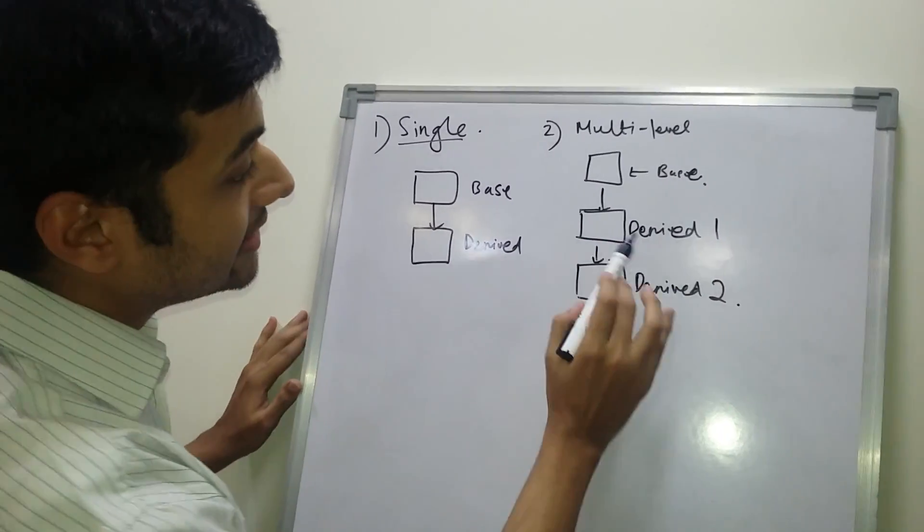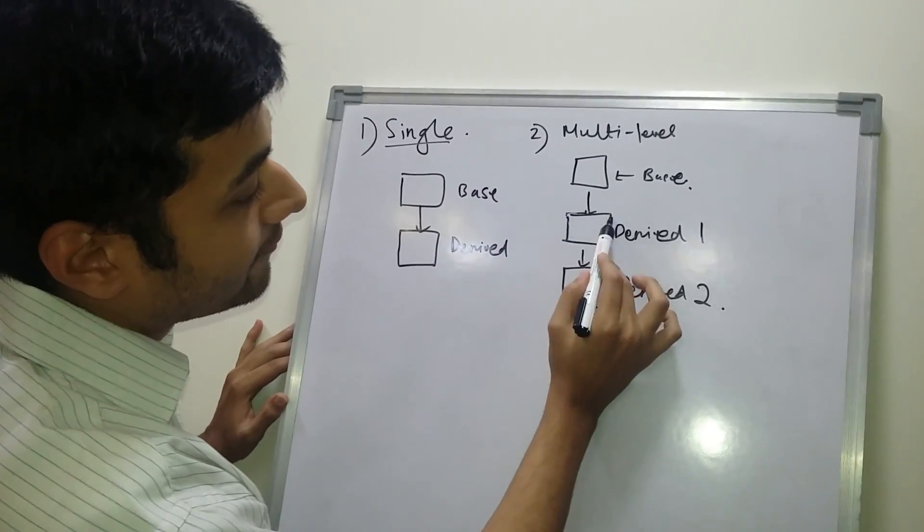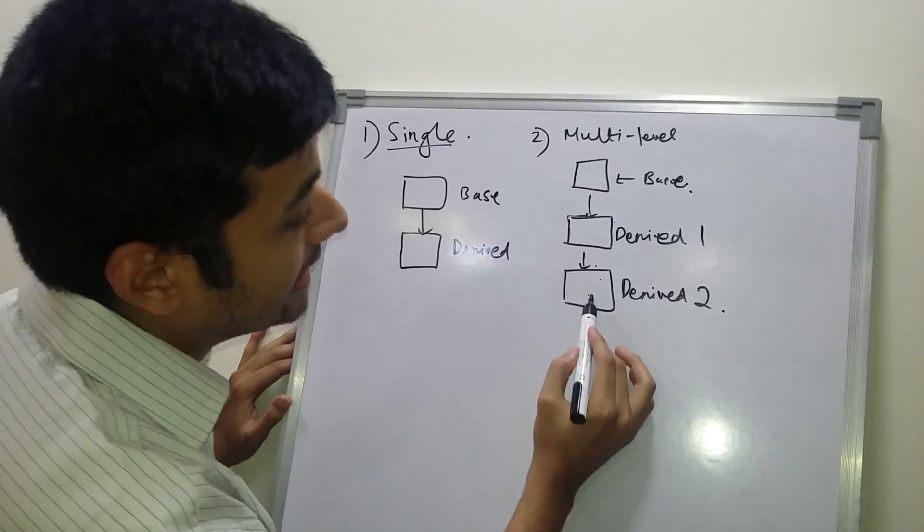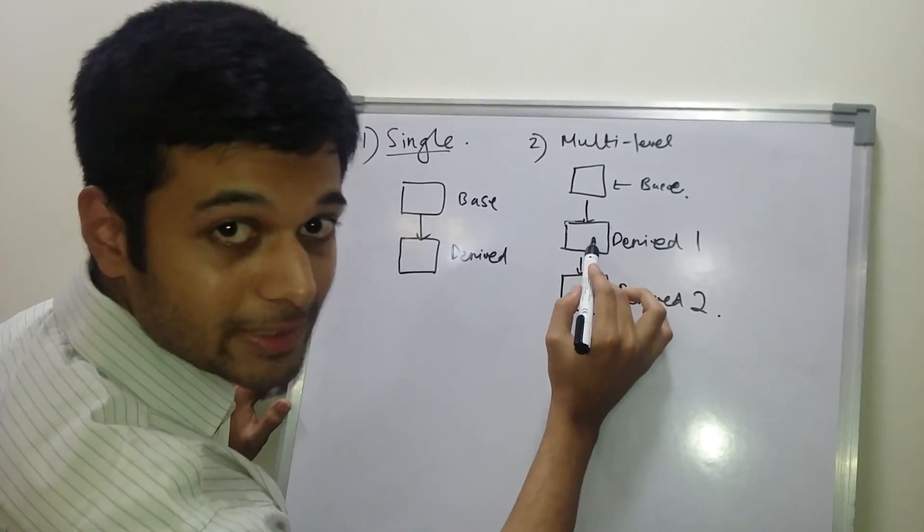So over here you can see, this is the derived class of this base class, and this is the derived class of this base class.